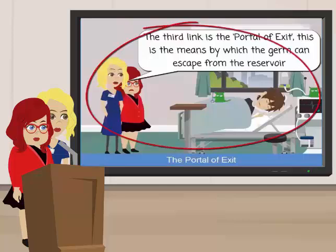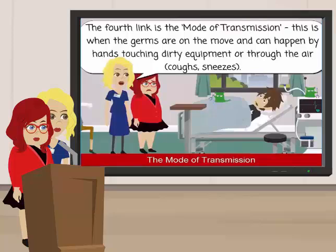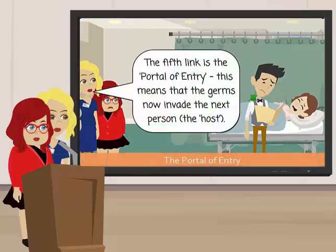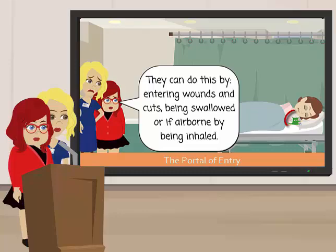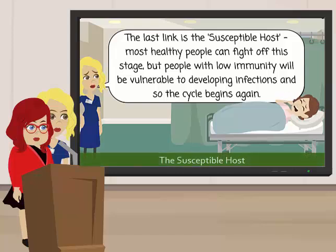The fourth link is the mode of transmission — when germs are on the move. It can happen by hands touching dirty equipment or through the air by coughs and sneezes. The fifth link is the portal of entry, where germs invade the next person, known as the host, by entering wounds and cuts, being swallowed, or inhaled if airborne. The last link is the susceptible host. Most healthy people can fight off infection, but people with low immunity are vulnerable, and the cycle begins again.